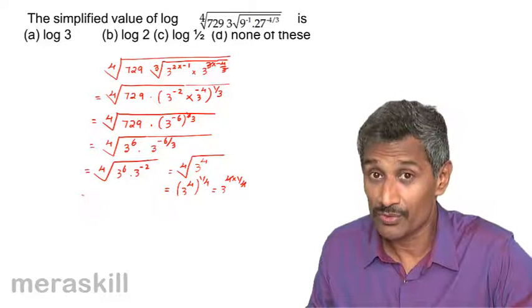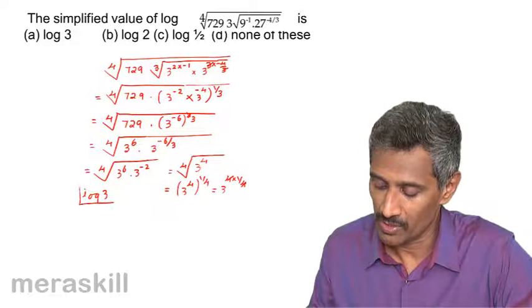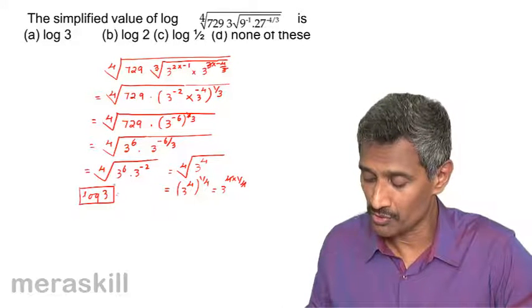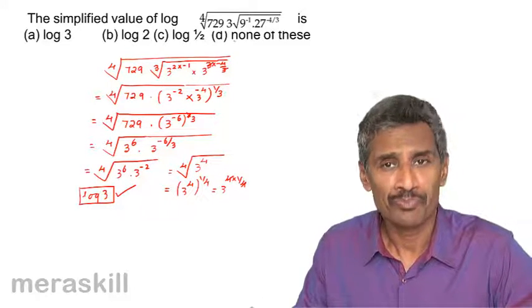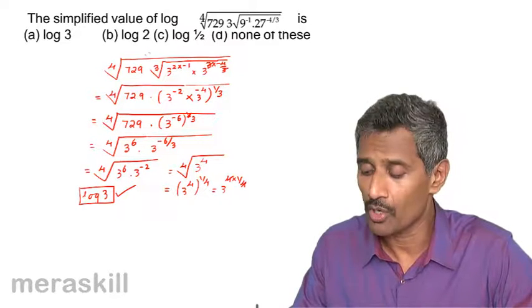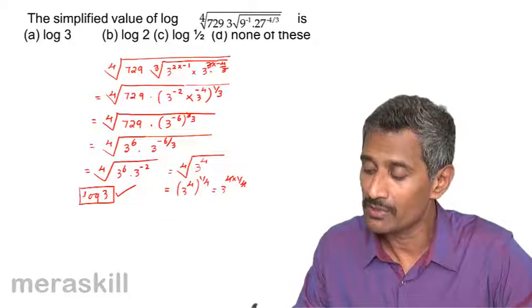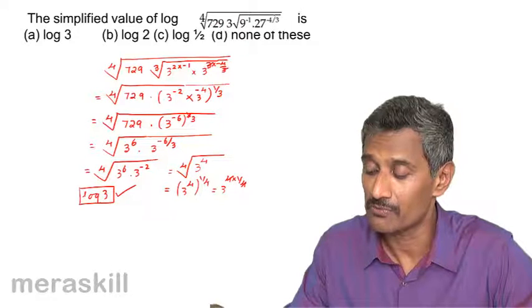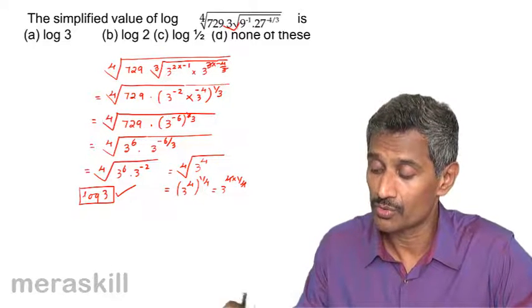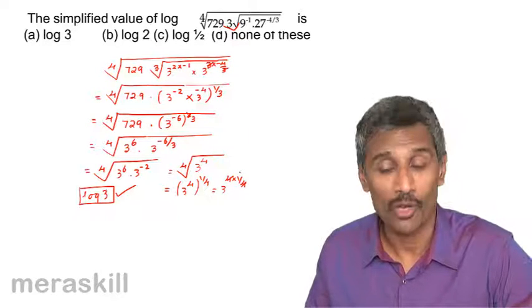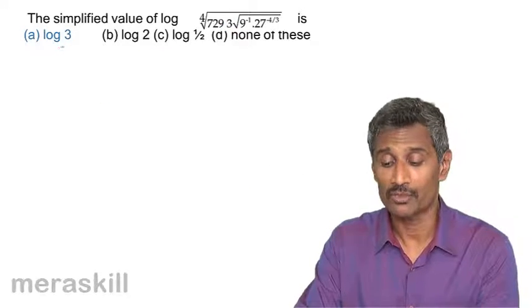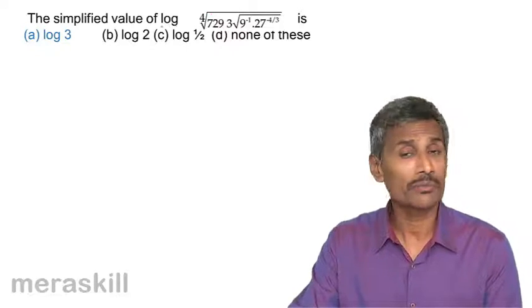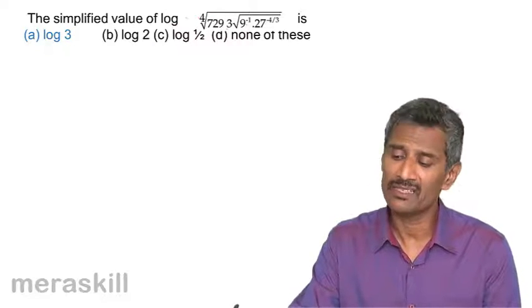Ultimately the whole expression equals 3, and since it is inside a log, the answer is log 3 to the base 10. The hint here is: don't bother about the log first — simplify the expression. All of 27, 9, and 729 are powers of 3, so express everything in terms of powers of 3 and the log will follow by itself.